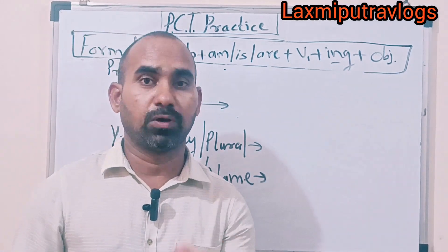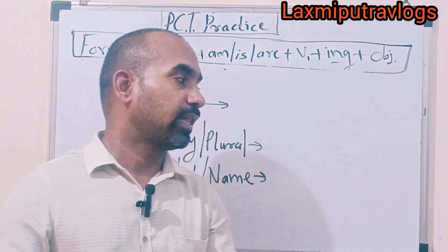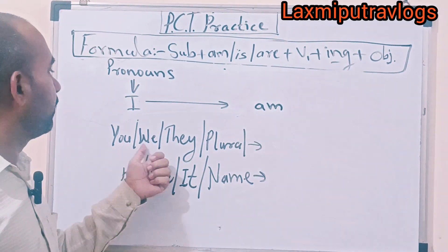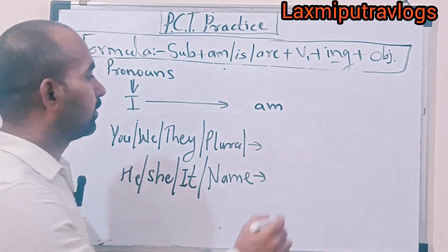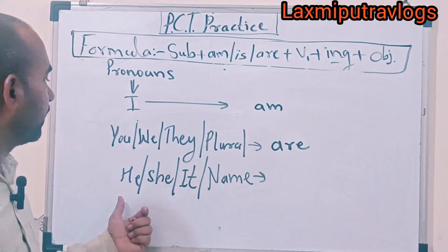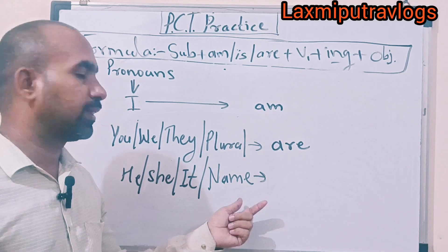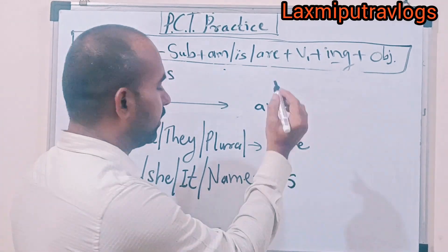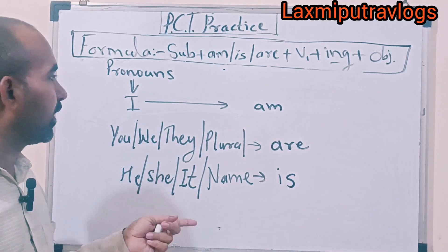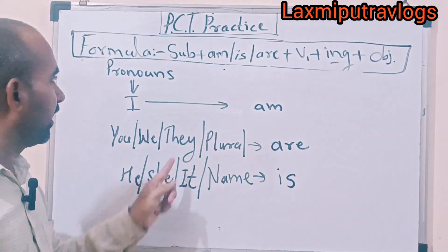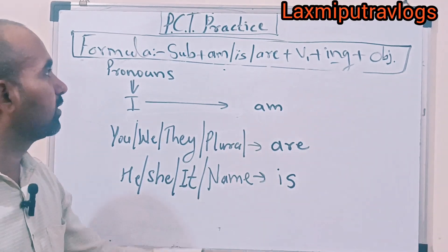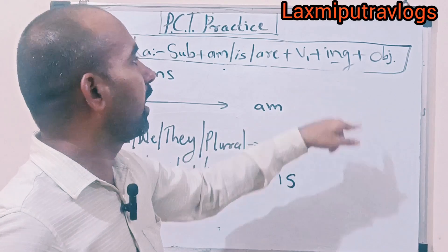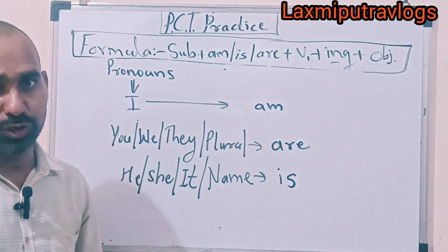At the end, an important point: after 'I', use 'am'. After 'you', 'we', 'they', and any plural subject, use 'are'. After 'he', 'she', 'it', or any singular name, use 'is'. So: subject, then am/is/are as the helping verb, then V1 plus ing, then the object. That is how you form a Present Continuous sentence.